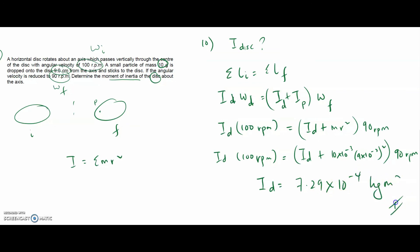So the answer is 7.29×10⁻⁴ kg·m². I hope you understand this topic — good luck with your assignment.